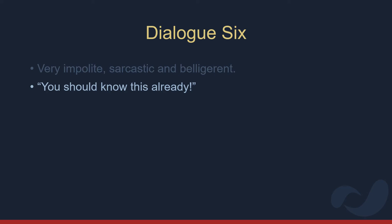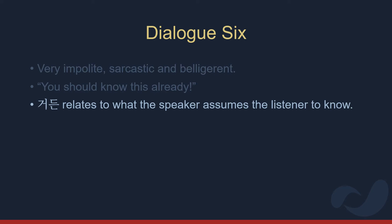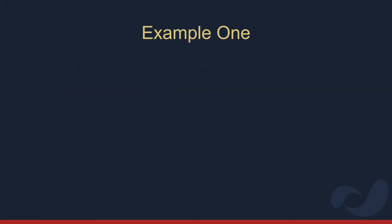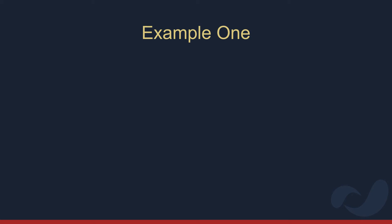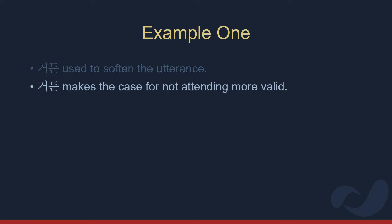In this next example, Younghee is letting her boss know that she cannot make the staff dinner because she already has plans for the following night. The boss expects everyone to attend without exceptions. In her response, the speaker uses 거든 to soften the utterance. Unlike the impolite examples, the speaker isn't saying you should have known this already. Here the speaker is trying to be polite and show that she feels uneasy about the exchange. She's simply stating the facts as they are. In this example, 거든 makes her case for not attending appear more valid and truthful.